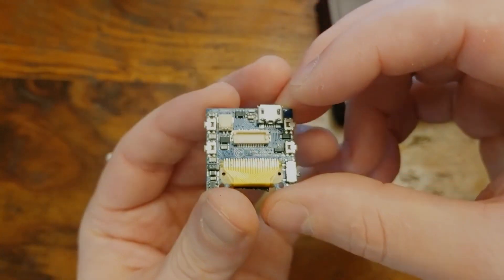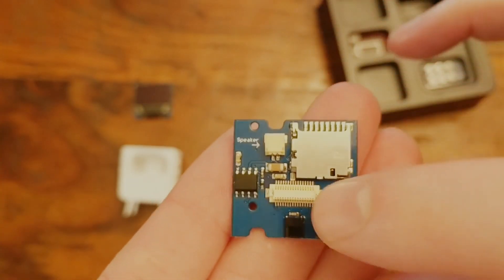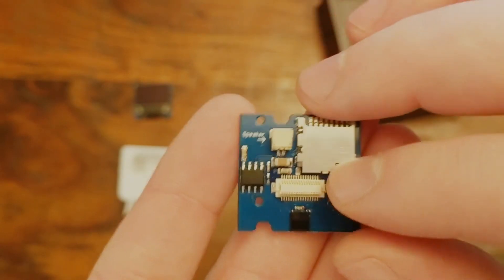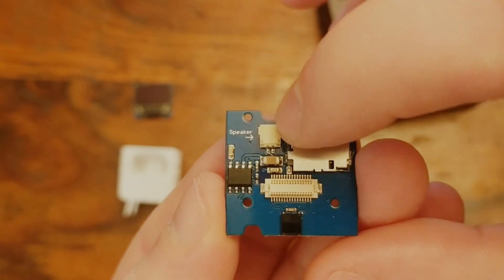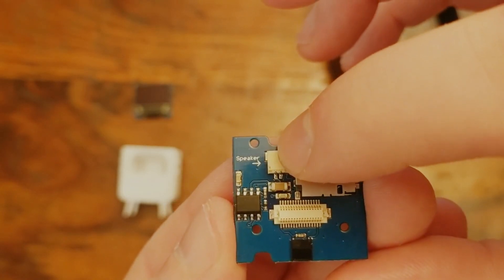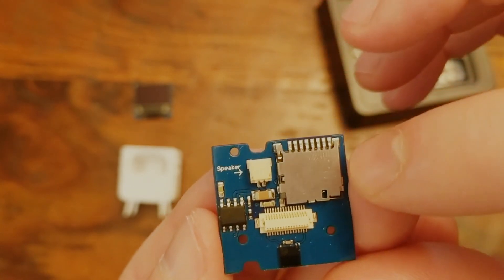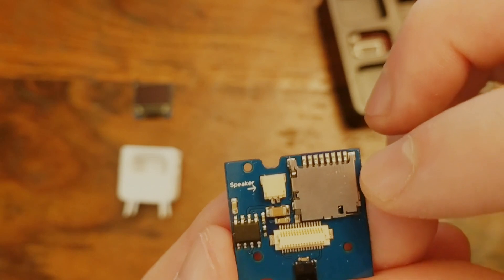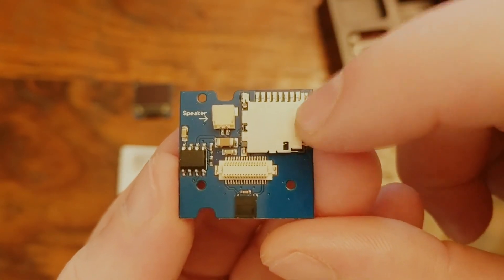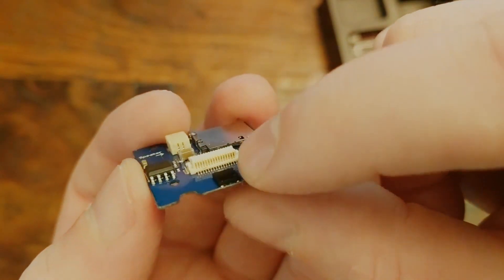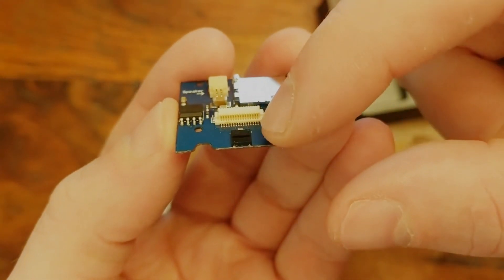The next component is the audio player board. This attaches to the video board using that expansion port in the center. It just snaps right in. This board is where you'll plug in the speaker, and it also has the SD card port where you'll put your video files. And it has an IR receiver where it picks up signals from that remote control.